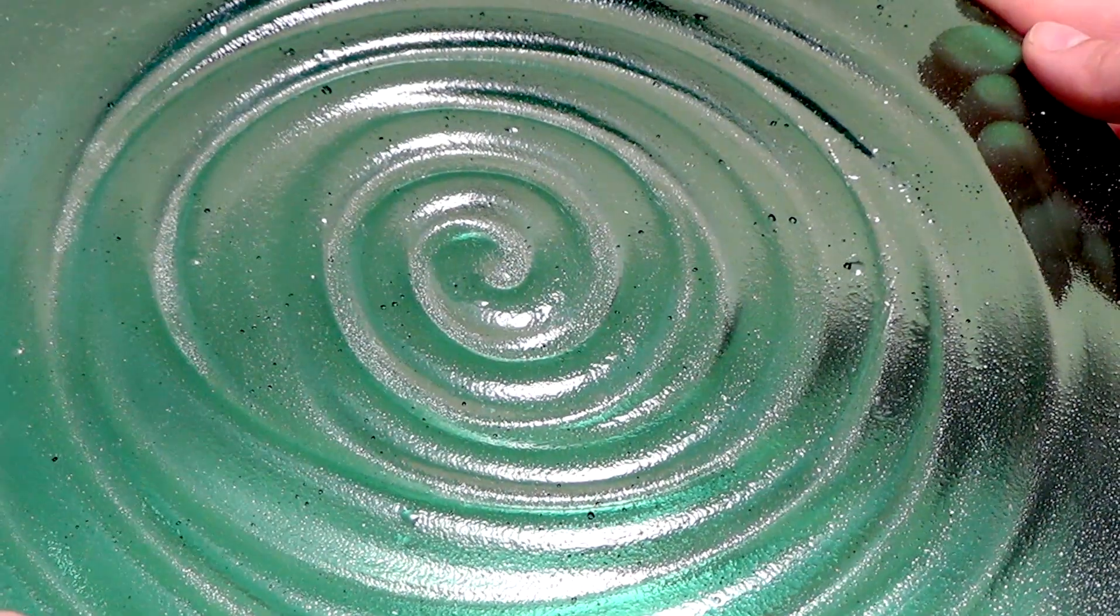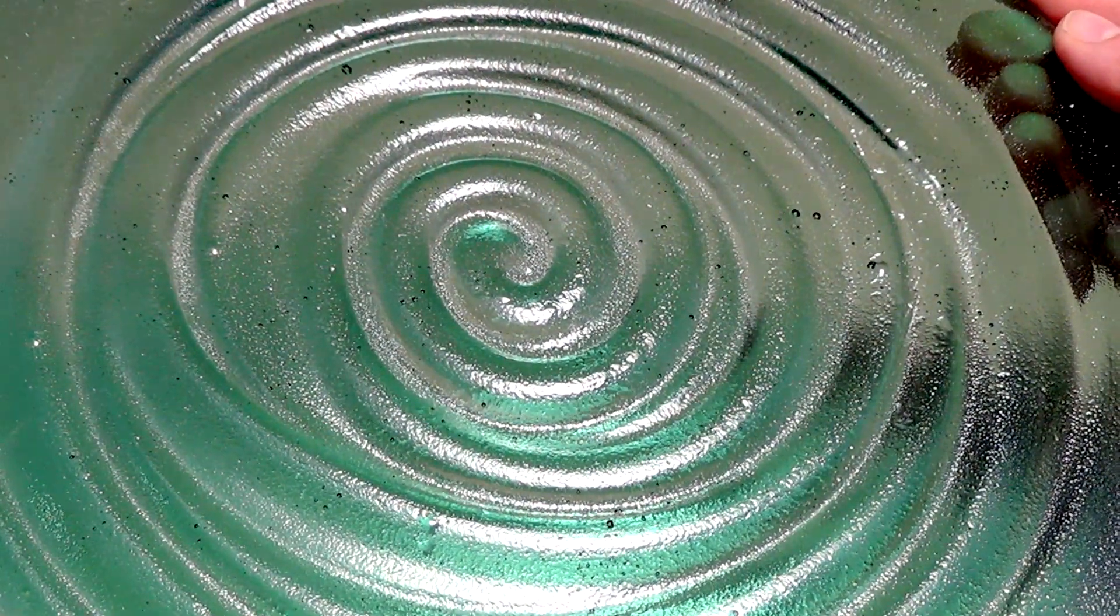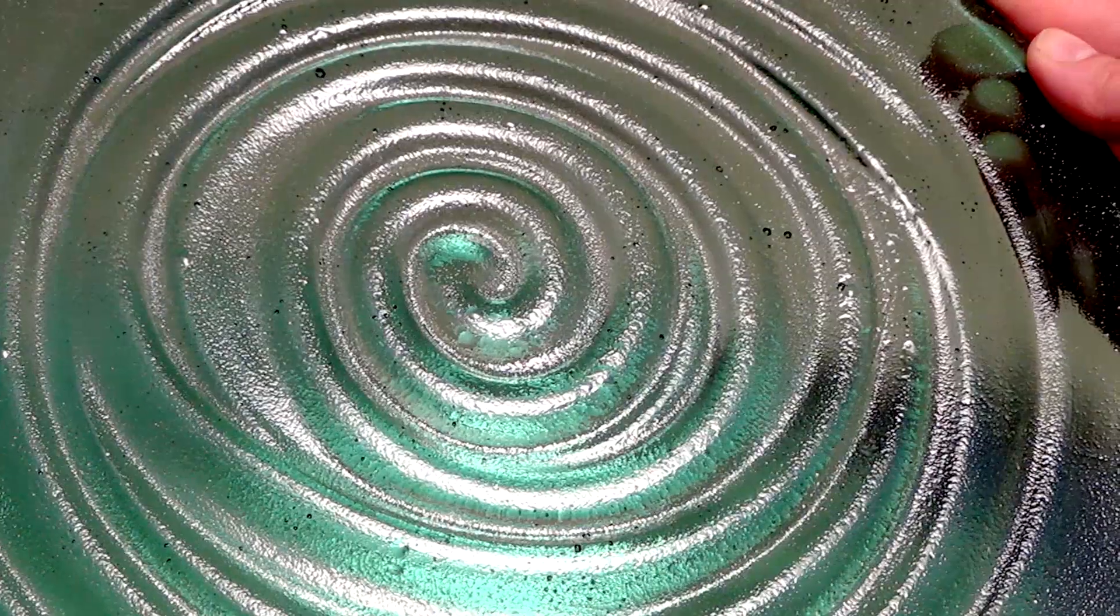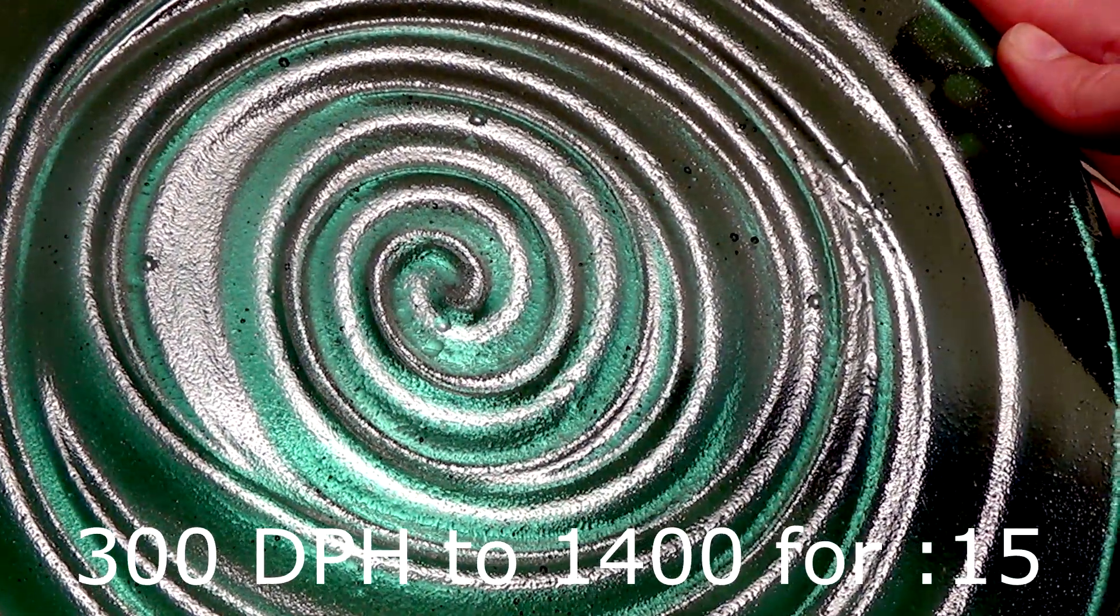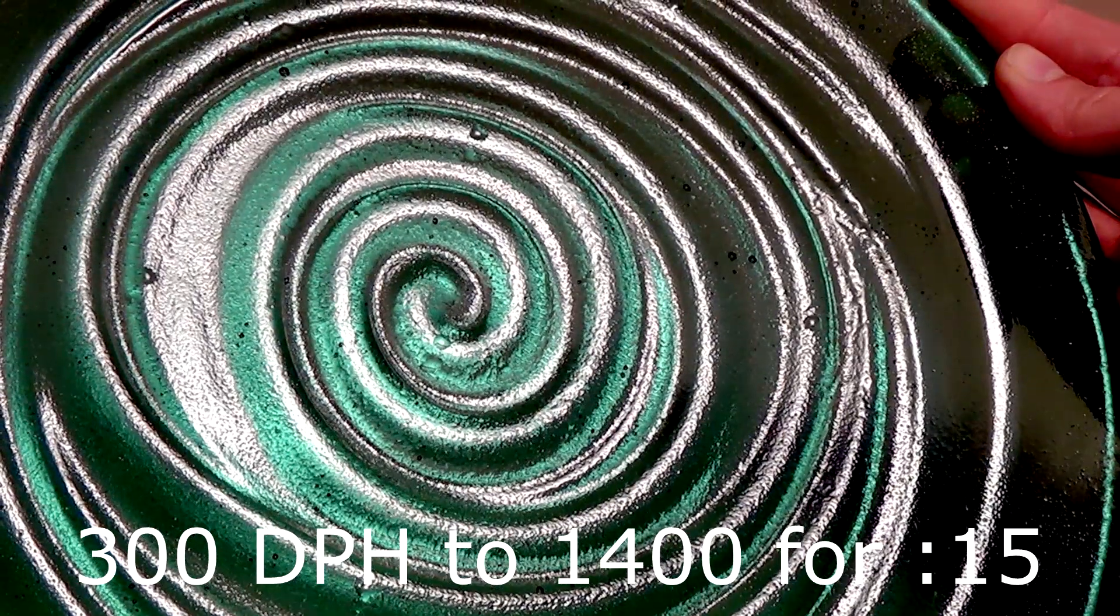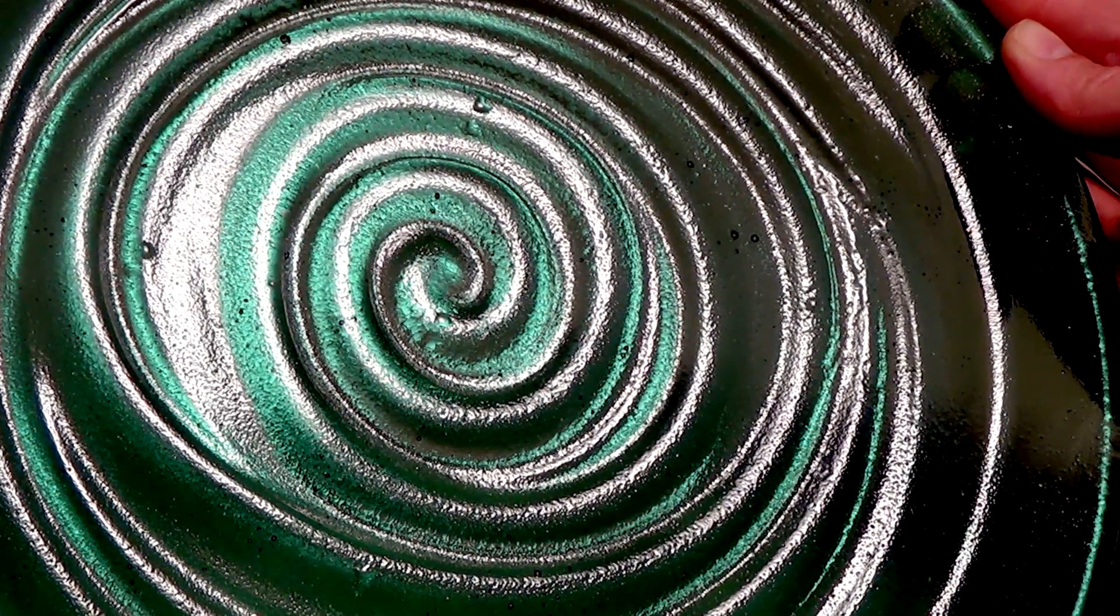Different looks are created depending upon how the pieces are fired on the texture plate. At 1,400 degrees, the glass is touching all of the valleys in the mold, and the texture of the shelf primer gives the glass a uniform, pebbly look.